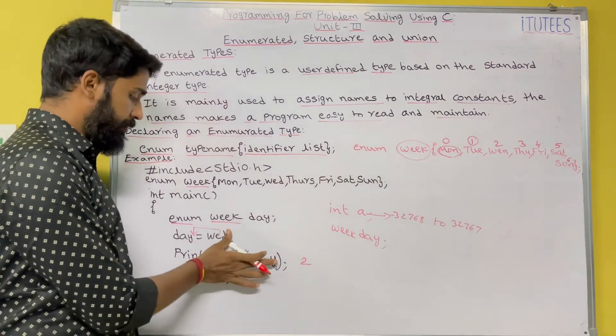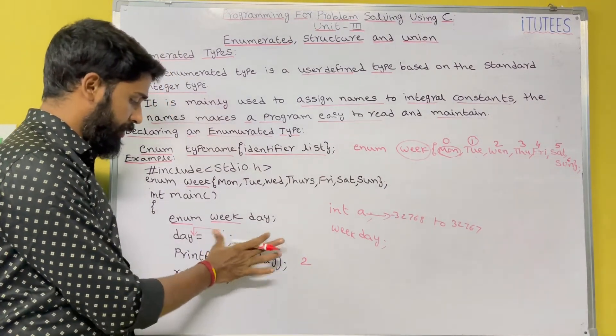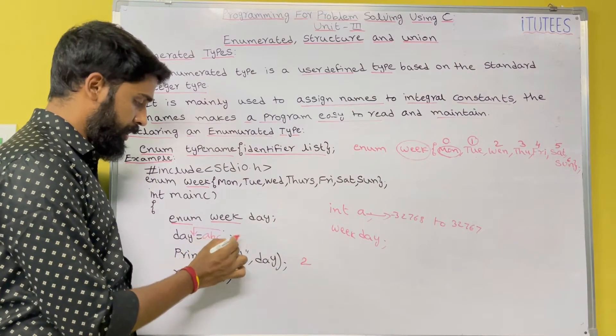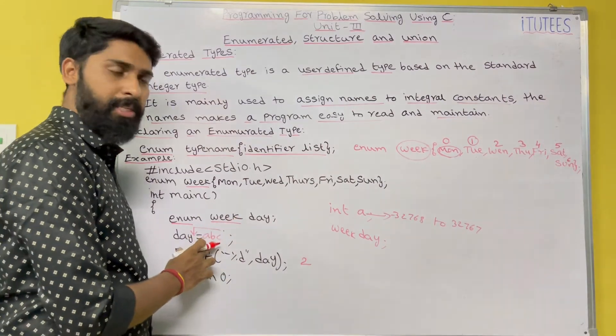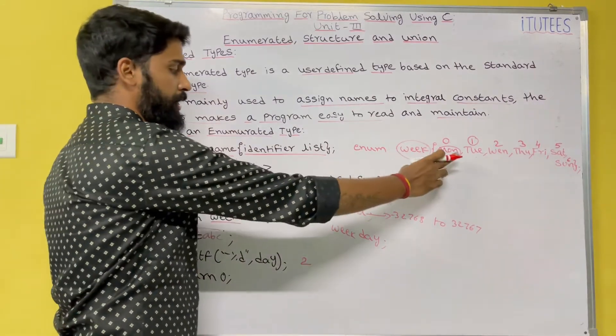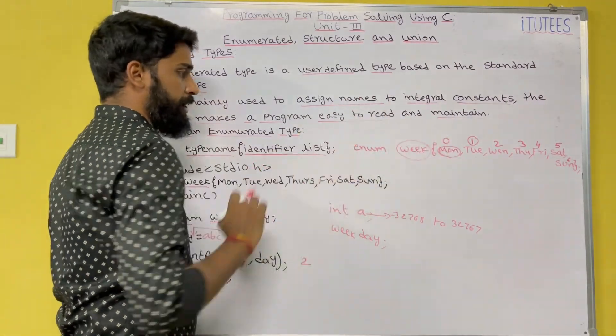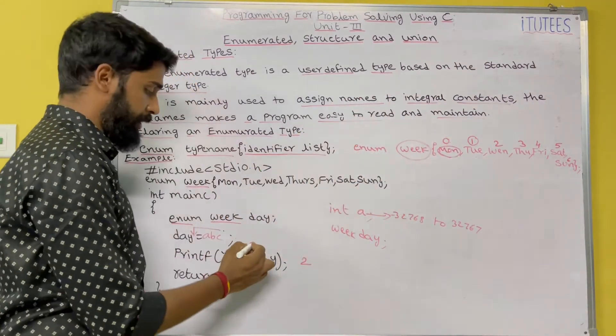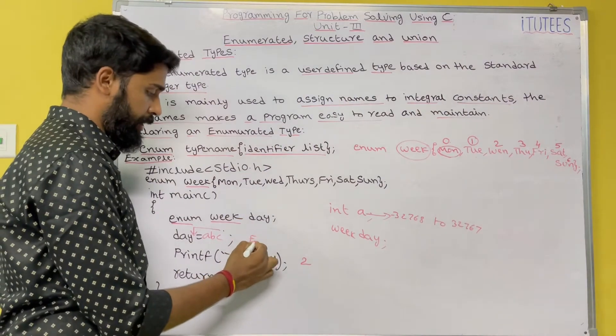Instead of these valid day names, if you give any value like a, b, c — which is not in the identifier list — it returns an error.